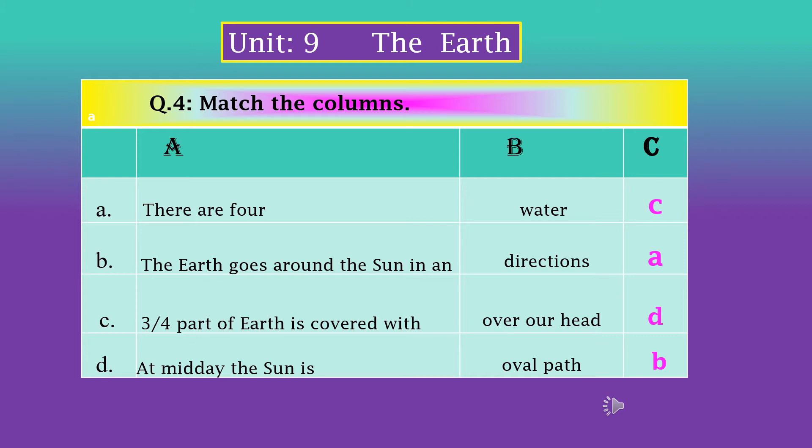And in column C we will write the correct alphabets that are written with column A half sentence. So you can either write the alphabets or letters I have written in column C, or you can match it by drawing a line.